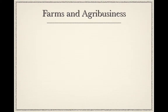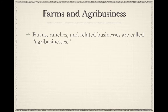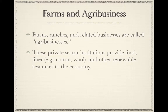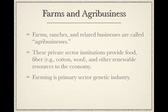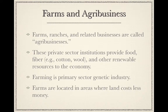Farms, ranches, and related businesses are called agribusinesses. These private sector institutions provide food, fiber — for example cotton or wool — and other renewable resources to the economy. Farming is a primary sector genetic industry. Farms are located in areas where land costs less money.